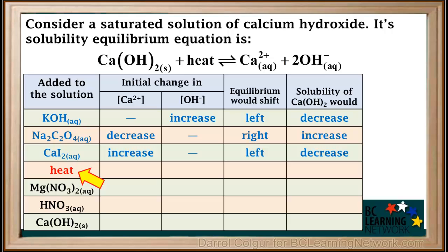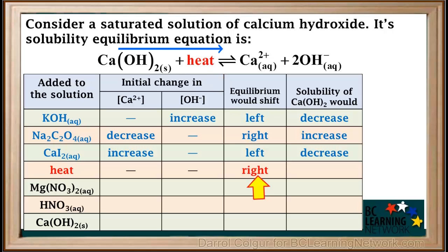Next we'll consider adding heat or increasing the temperature. Adding heat will have no initial effect on the concentration of calcium ions or hydroxide ions. Because the heat term is on the left side of the equation, adding heat will cause the equilibrium to shift to the right, which will cause the solubility of calcium hydroxide to increase.